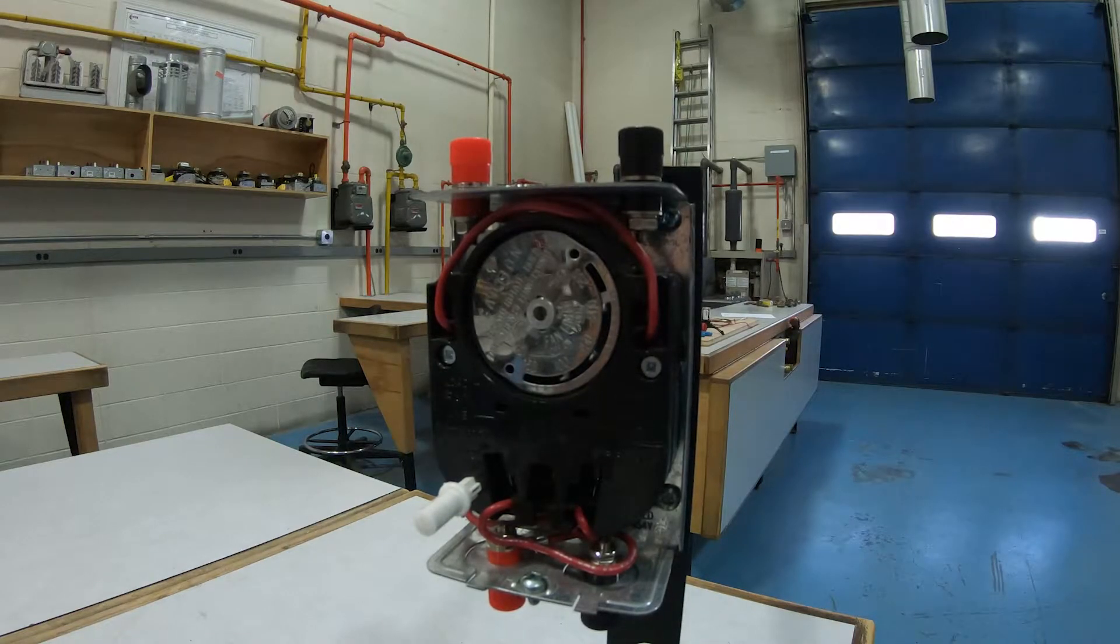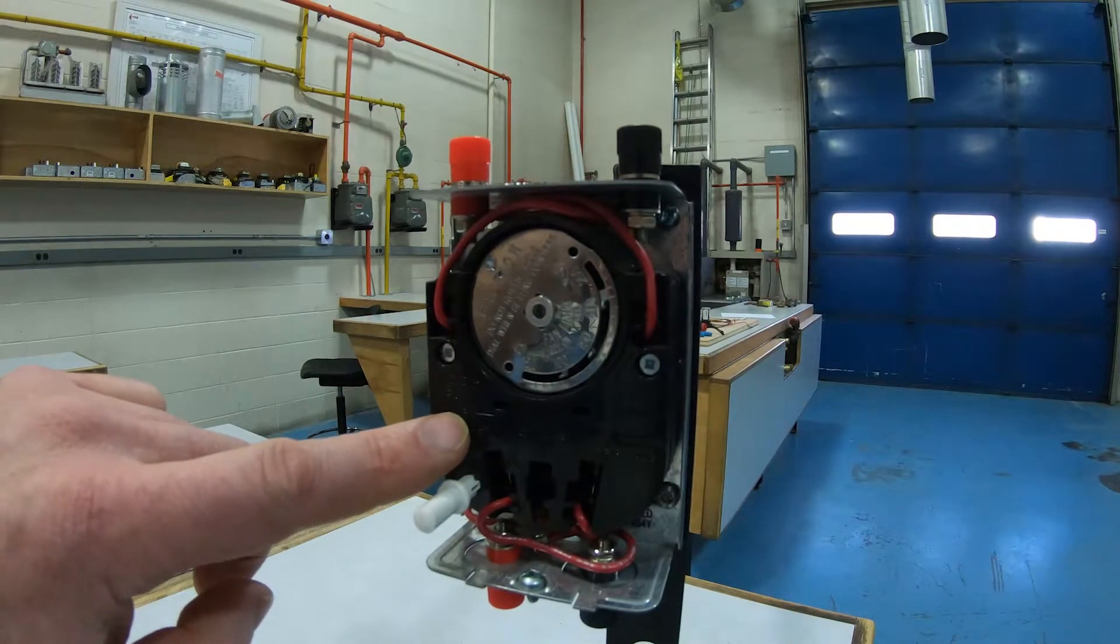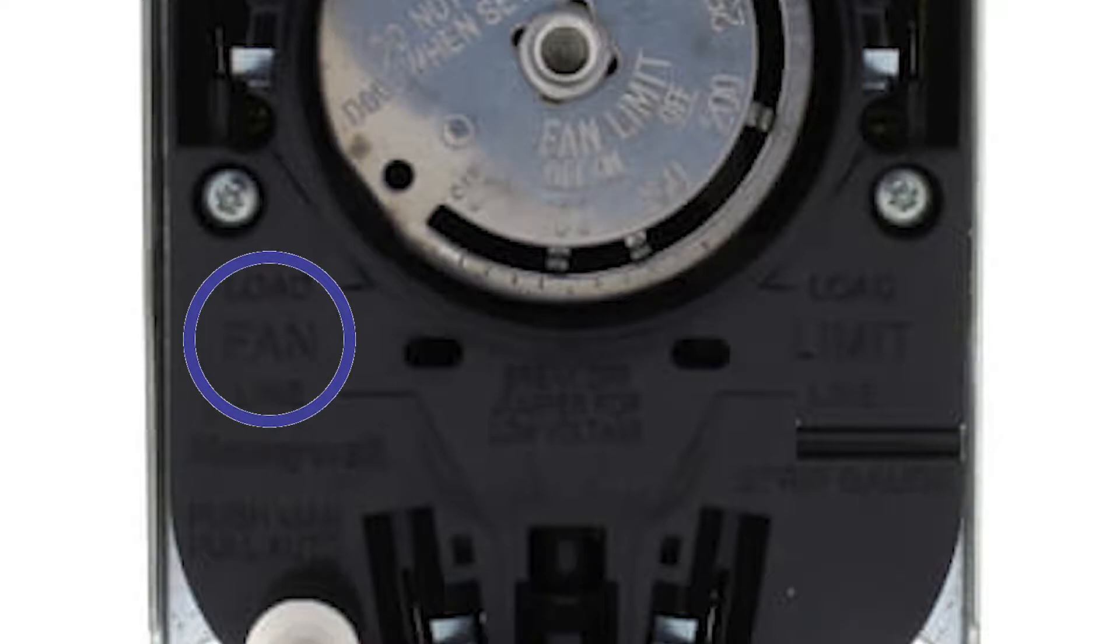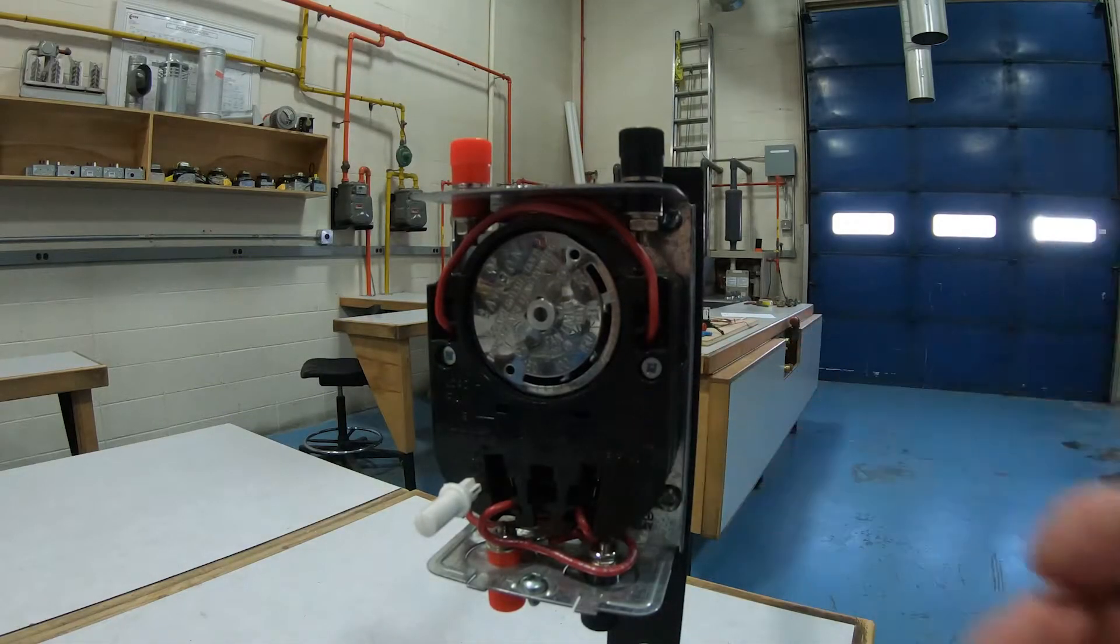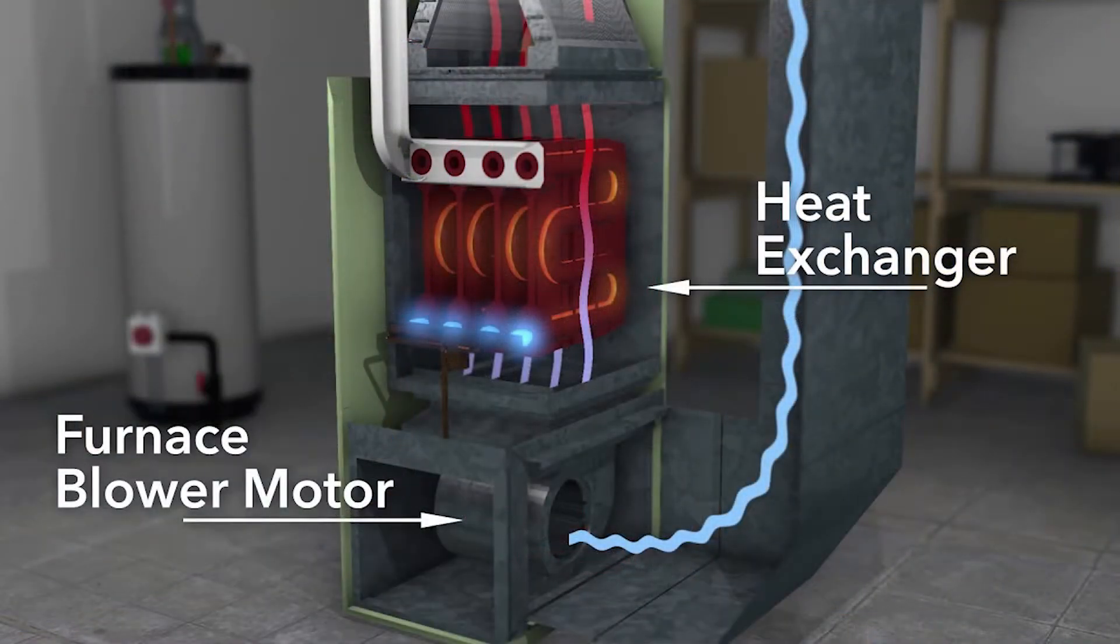First of all is the fan side, you can actually see labeled fan there. I may need to show you a close-up with this picture. The other side over here is the limit side. The fan side will turn the blower motor or the blower fan off and on in the furnace. The blower motor only comes on when it's hot enough and then it'll shut itself off again when it's cool enough.